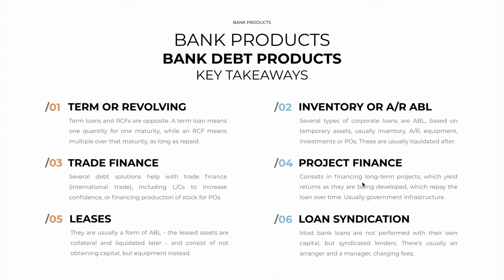Bank products also exist for project finance. These consist of financing long-term projects which yield returns — hopefully — as they're being developed, which in turn are used to repay the loan over time. These are usually government infrastructure projects, but not necessarily. Then we have leases, usually a form of asset-based lending. They consist not of obtaining capital, but obtaining equipment or a vehicle and paying interest on those borrowed assets. And if the borrower takes ownership, they can be liquidated after — for example, you can borrow $100 million to lease a fleet of Mercedes for 5 years and then take ownership of them to sell them and lease new ones.